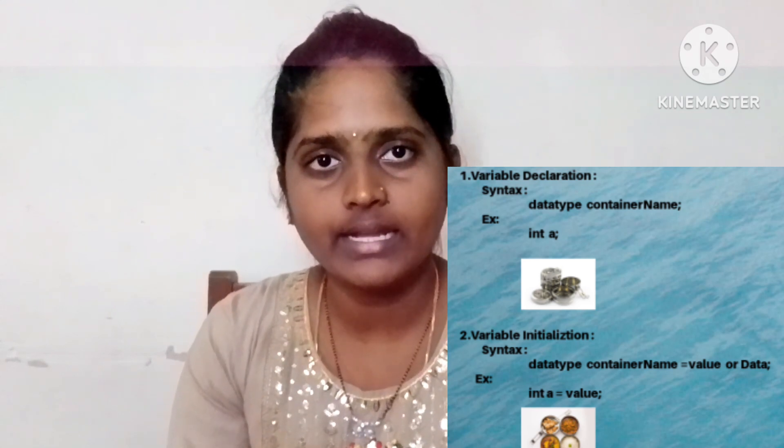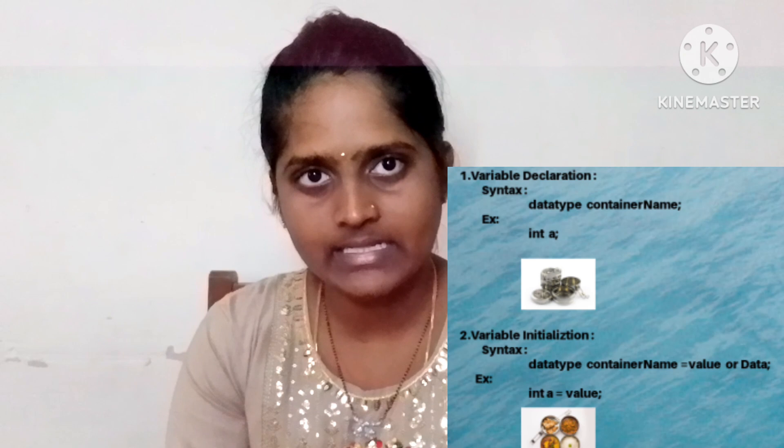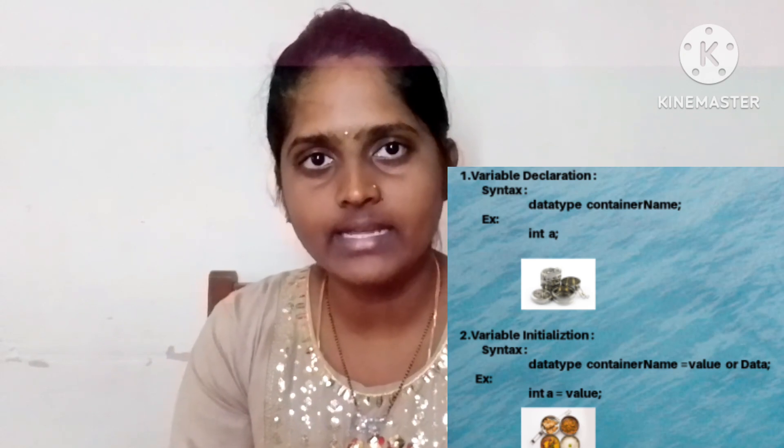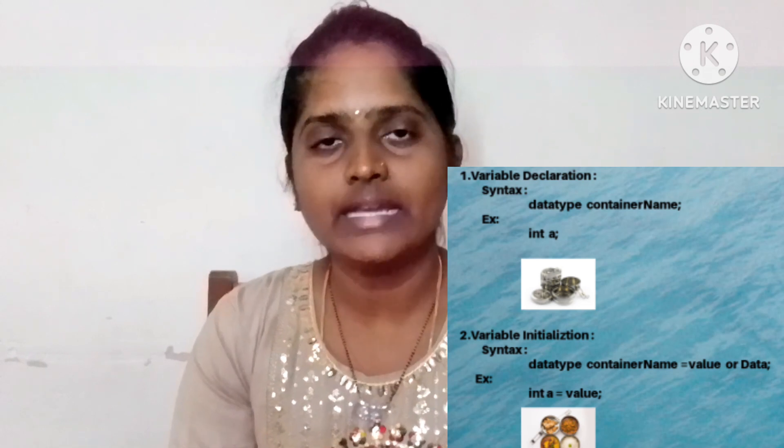A variable is a container to store a value or data. For example, think of a tiffin box — the tiffin box is the container and the food stored inside is the data. Similarly, a variable stores data or a value. Taking the container or tiffin box is called declaration. Putting food inside it is called variable initialization.